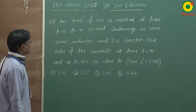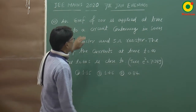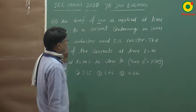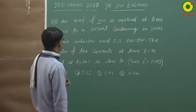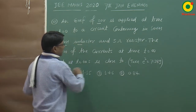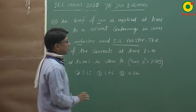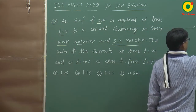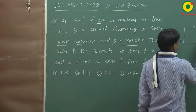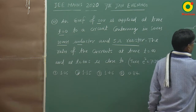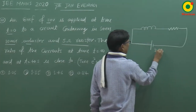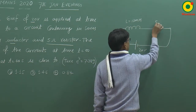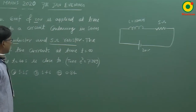Question number 10. An EMF of 20 volt is applied at time t=0 to a circuit containing in series a 10 millihenry inductor and 5 ohm resistor. कहने का मतलब यह है कि एक LR circuit है, जिसमें एक inductor है, एक resistor है और एक battery है। Battery का value 20 volt, inductor 10 millihenry और resistor 5 ohm दिया गया है।